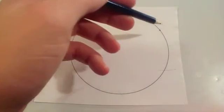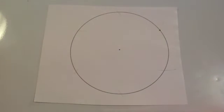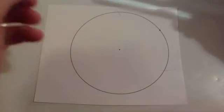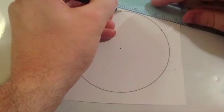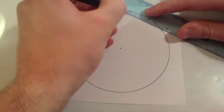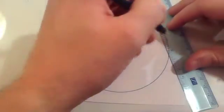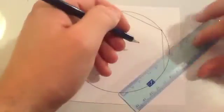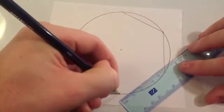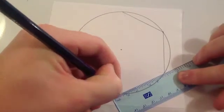If your arc doesn't go through the point exactly like mine does then your compass has been either set too small or too large to begin with or it's been knocked as you're doing it. Just be careful whenever you're joining these up because you're doing it absolutely perfectly.